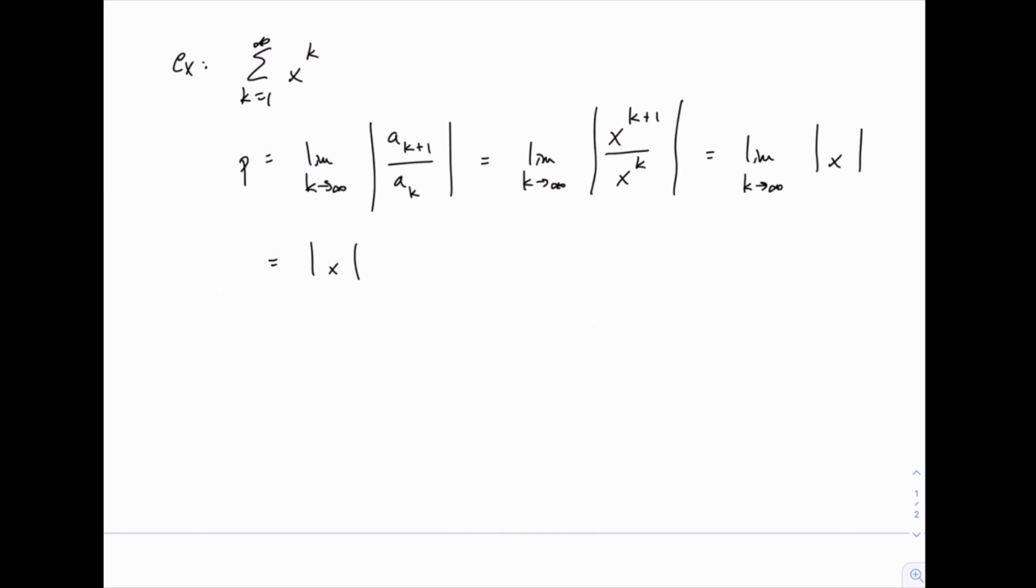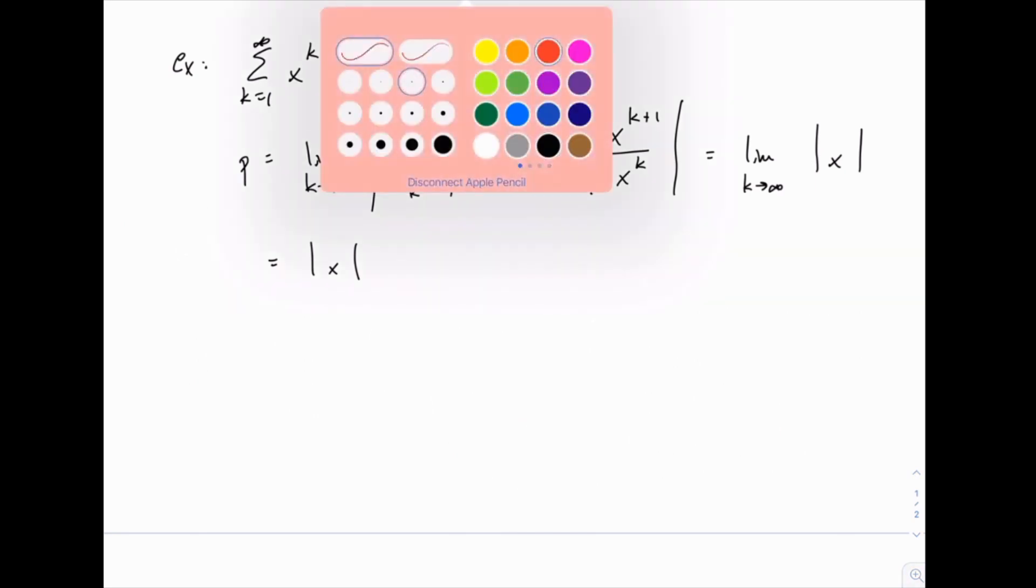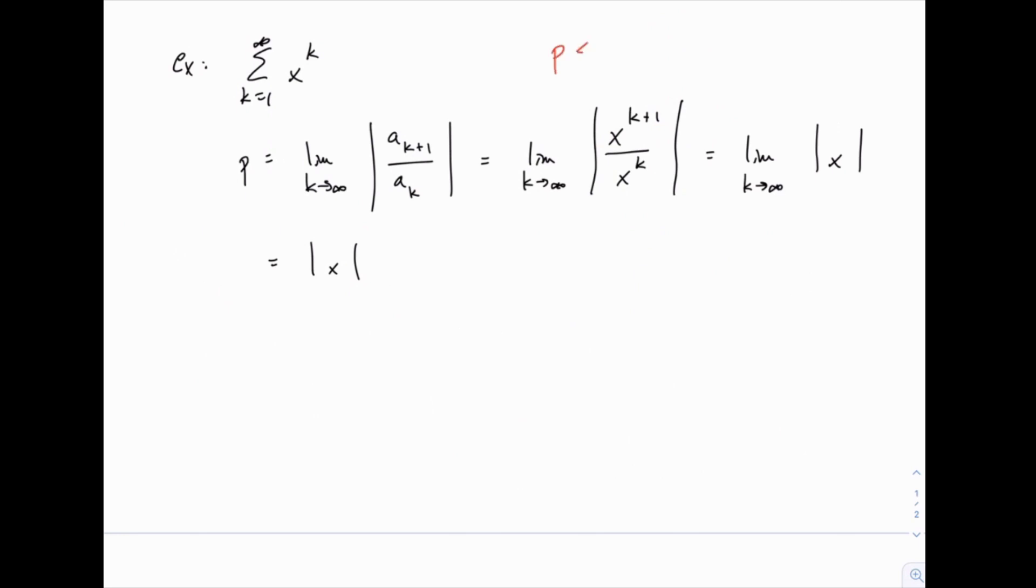If you remember, for the ratio test to work, the ratio test says this converges whenever p is less than 1. If p is greater than 1, it diverges, and if p equals 1, the test is inconclusive. So the absolute value of x, that's what the value of p is, and that has to be less than 1. So it converges whenever the absolute value of x is less than 1.